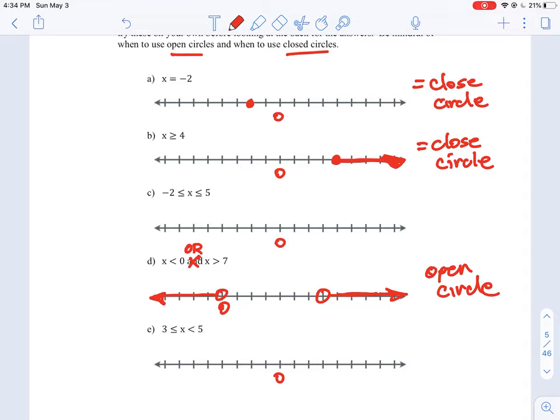So let's go back to C here. C is negative 2 is less than or equal to x is less than or equal to 5. Now when we write it together like that, it means x has to be less than or equal to 5 and greater than or equal to negative 2. So it has to be both simultaneously, both expressions have to be true.